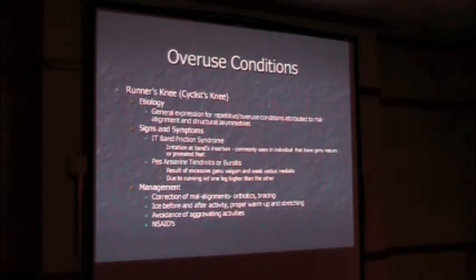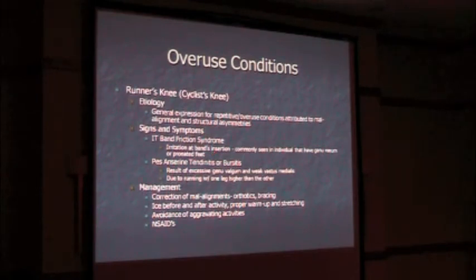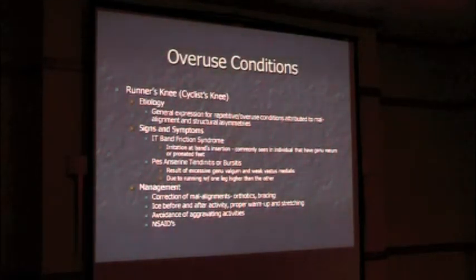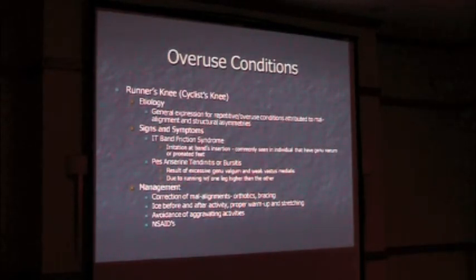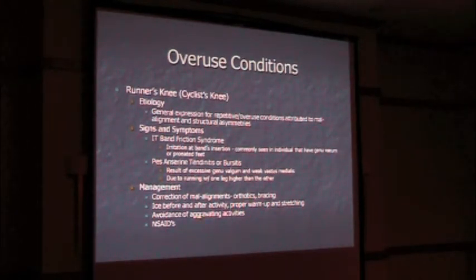Runner's knee and cyclist's knee are usually due to repetitive overuse conditions, occasionally from malalignment of the knees. IT band syndrome is very common, particularly in runners and cyclists, with irritation at the IT band insertion — occurring proximally up in the hip region or distally at the iliac wing or at the tibial insertion. You can also have pes anserine tendinitis or bursitis on the medial side of the knee. A lot of times this can be corrected with proper orthotics or bracing, ice, anti-inflammatories, and stretching. Most are treated non-operatively.